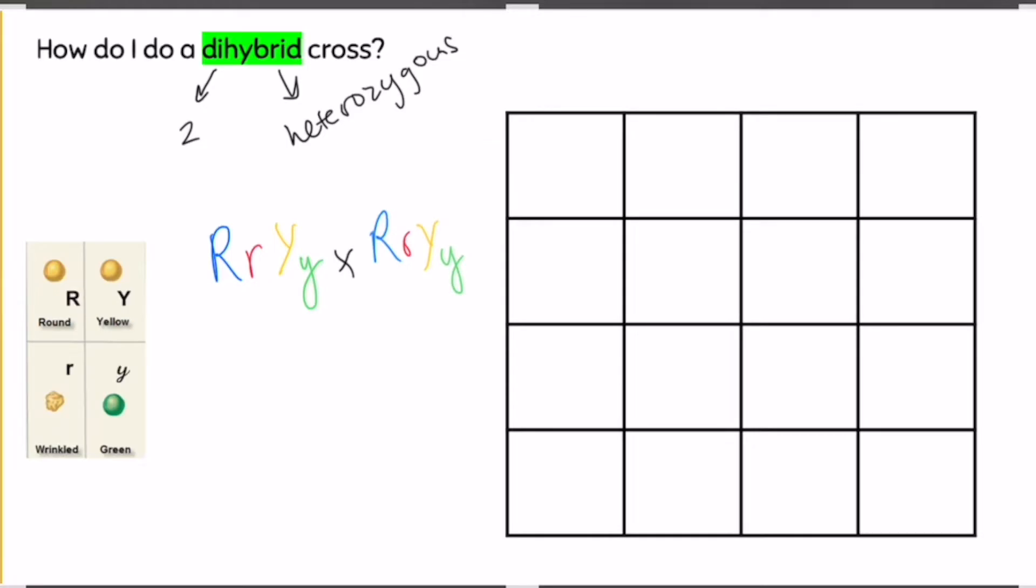So on my Punnett square, this time I have 16 squares instead of 4, and I am going to do all the possible combinations across the top. So I could have a capital R with a capital Y. I'm going to do one of each trait for each of my combos. I could have a capital R with a lowercase y, I could have a lowercase r with a capital Y, or I could have a lowercase r with a lowercase y. So those are my four possible combinations of the two different traits for those alleles.